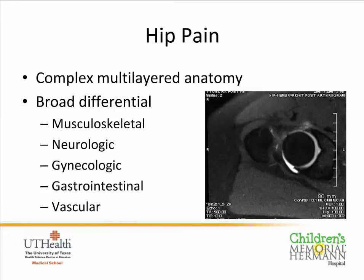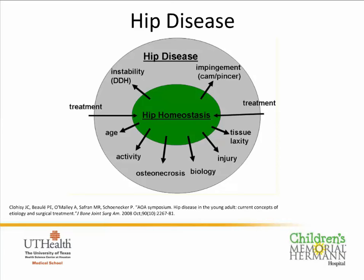This image from our mentors in the hip world illustrates hip disease. There's a central zone we call hip homeostasis — where the hip is in its happy place. There's not one specific area that causes the hip to be abnormal; you can find things that would be abnormal on x-rays or MRIs but the hip has no pain. Various factors act on the hip and can cause it to move out of that zone into hip disease.